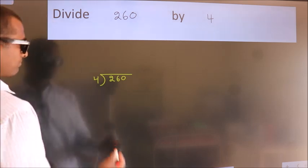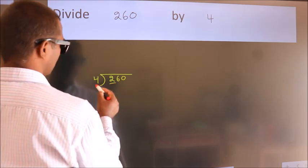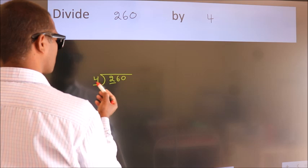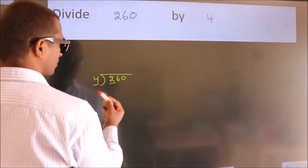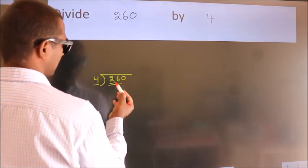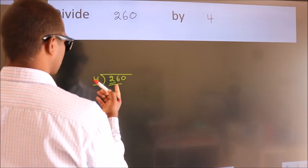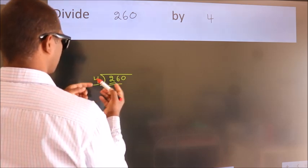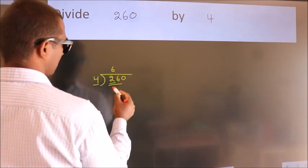Next, here we have 2, here 4. 2 is smaller than 4, so we should take 2 numbers, 26. A number close to 26 in the 4 table is 4 times 6, which is 24.